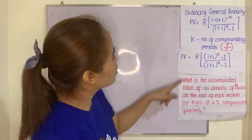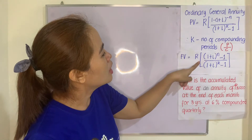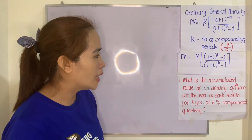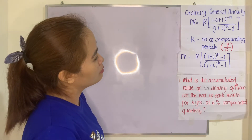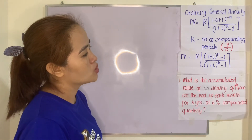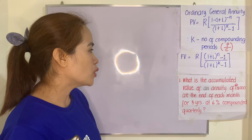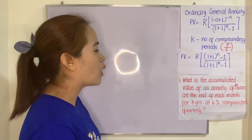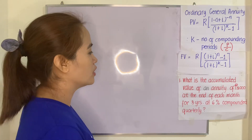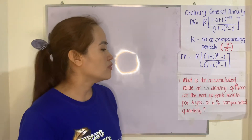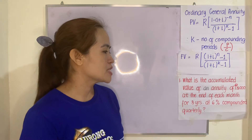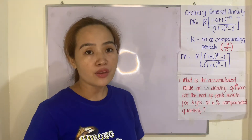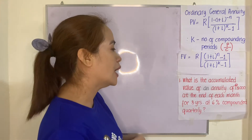For the future value, you have R multiplied by (1 plus I) raised to N minus 1, divided by (1 plus I) raised to K minus 1. Example 1: What is the accumulated value of an annuity of 3,000 at the end of each month for 5 years at 6% compounded quarterly? Let us verify first whether this is really a general annuity.